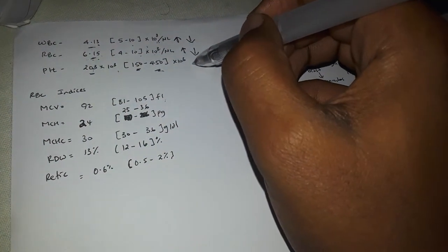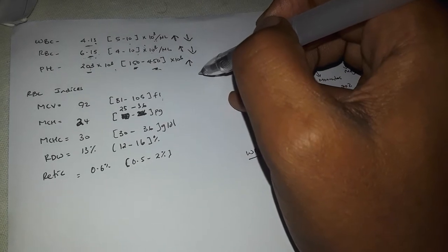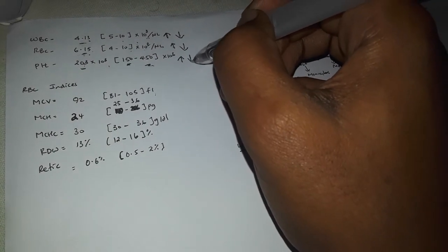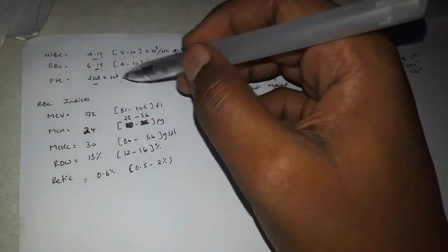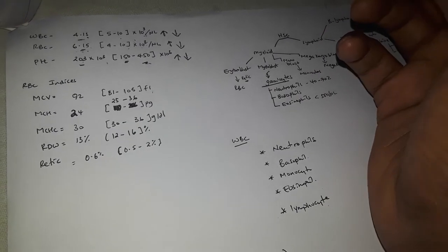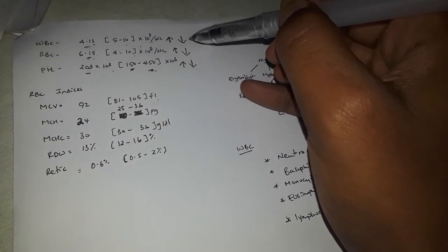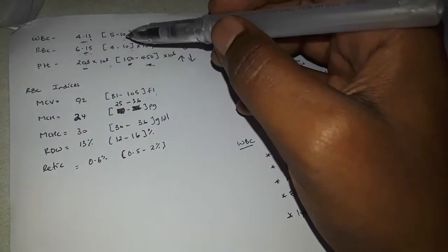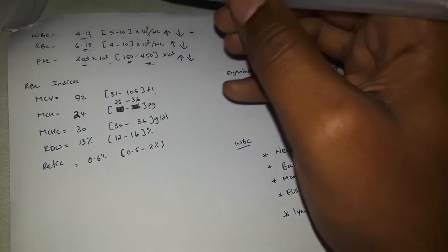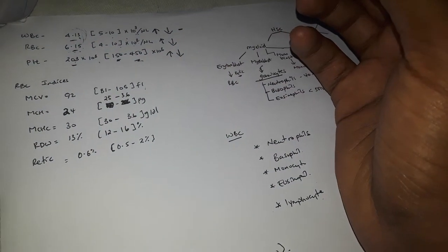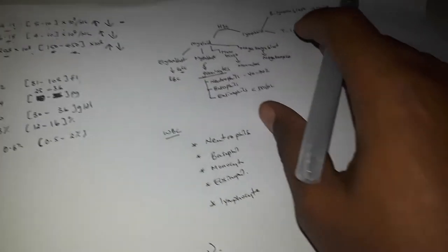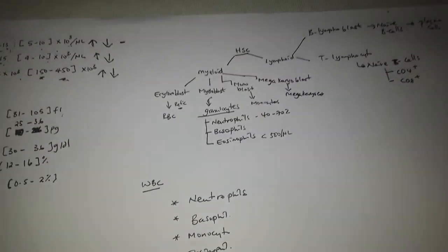Looking at the platelet count — thrombocytes are also called thrombocytes. This is an important part of the CBC results. The WBC found in the report is something I would like to explain further, and we will get more information on the WBC in subsequent reports.